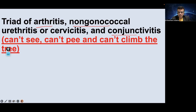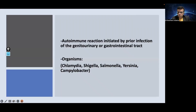Reiter's syndrome is an autoimmune reaction triggered by a prior infection of the genitourinary or gastrointestinal tract. The organisms implicated are Chlamydia, Shigella, Salmonella, Yersinia, and Campylobacter — these are the important organisms that could be implicated in its causation.